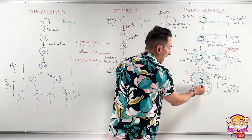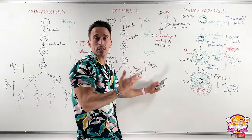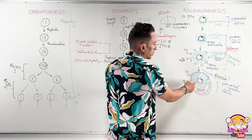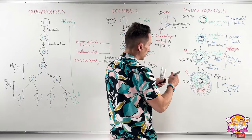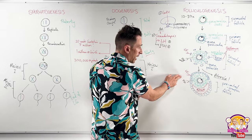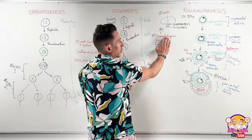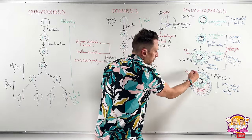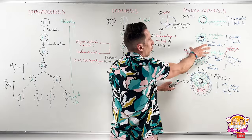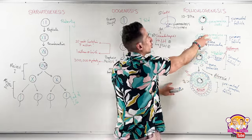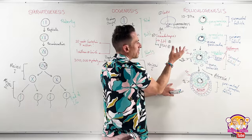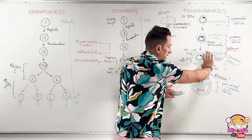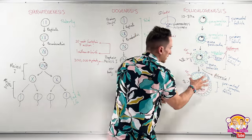Of the follicles that move forward, one will be the most mature. Because it has more granulosa cells and more theca cells, it has more receptors for LH and FSH. Even though overall LH and FSH levels are suppressed, the tiny remaining amounts preferentially stimulate this most mature follicle. All the less mature follicles, lacking sufficient receptors, die off — and the one with the most receptors is selected.